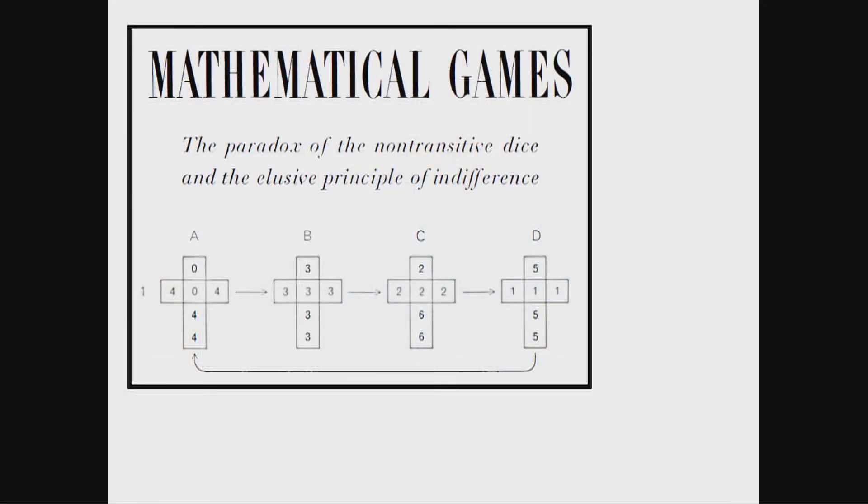Now, this was written about by Martin Gardner in 1970. He wrote about a set of four non-transitive dice called Efron dice. But the idea is the same. No matter which die my opponent picks, I can pick one with a better chance of winning.